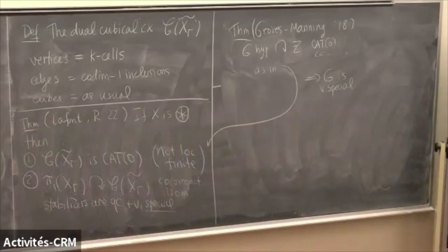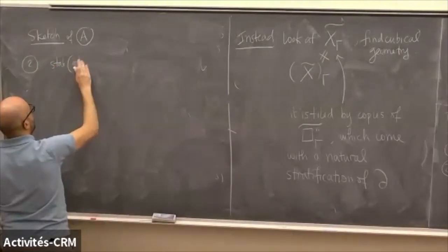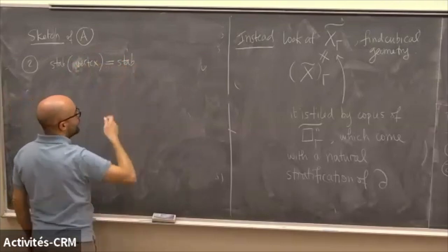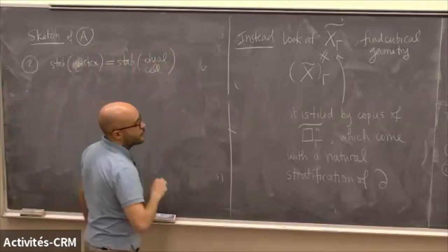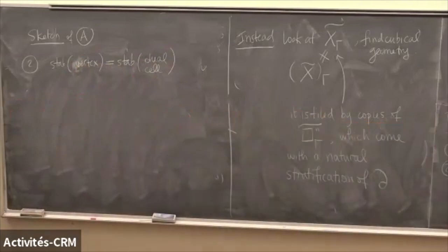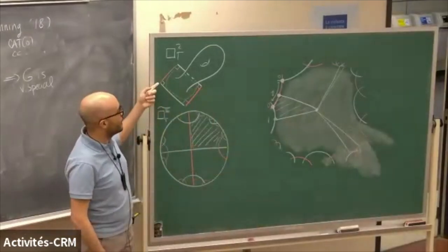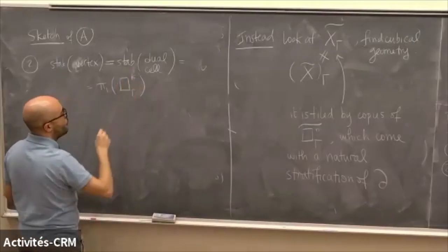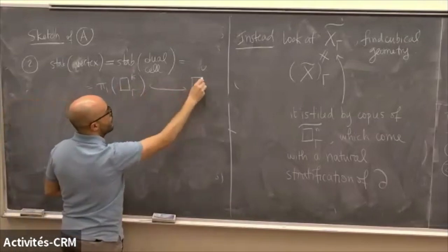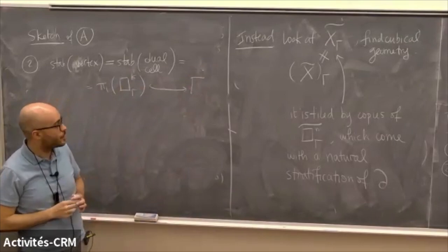Let me sketch some of the tools going into the proof. For part two — stabilizers — essentially the way the complex is constructed gives this to you for free. The stabilizer of a vertex is the stabilizer of the corresponding dual set for the deck transformation action. Those stabilizers identify with fundamental groups of the hyperbolizing pieces — quasi-convex subgroups of the arithmetic lattice gamma, which is special by the Agol-Wise result. That's how knowing gamma is special helps.